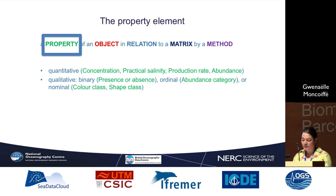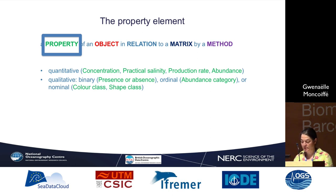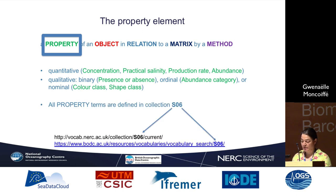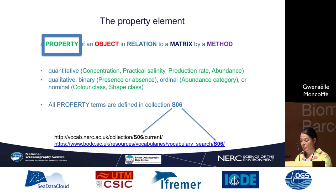The property element can be quantitative — like concentration, practical salinity, production rate, or abundance — or it can be qualitative: either binary, for example present/absence, or ordinal like a category such as abundance category, or just nominal, like a text value such as color class, shape class, etc. All those property terms are defined in one collection called S06, which can be obtained from either the vocab server, the BODC search interface, or the SeaDataCloud search interface.